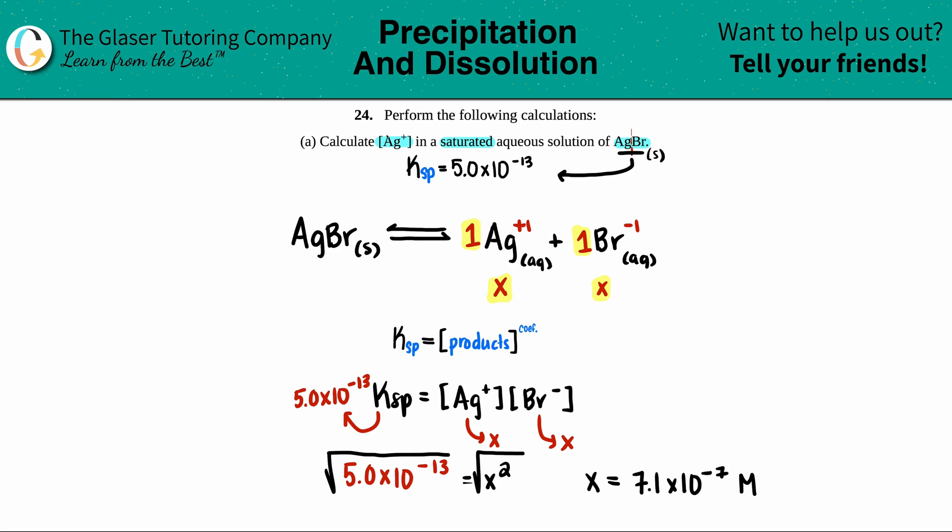So now they just wanted to calculate the Ag+. So I just go back to my balanced equation and I notice that Ag+ is just the X value. So I can say the concentration of Ag+, which was X. And that's what this was, 7.1 × 10^-7 molarity. And that is the answer for the first part.